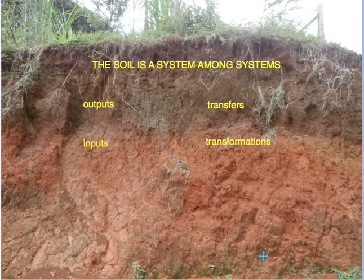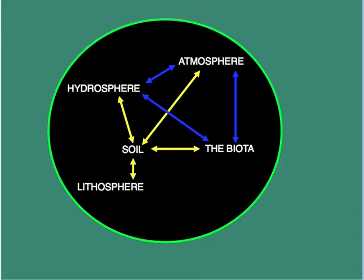The soil is indeed a system among systems, and it is subject to many inputs. From the soil arise many outputs. There are also several transfers occurring within the soil, and there are also transformations occurring within the soil. Consider this summary diagram or model before putting together your own model or diagram.